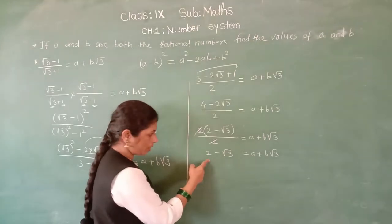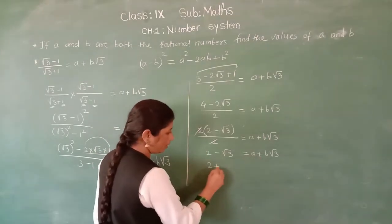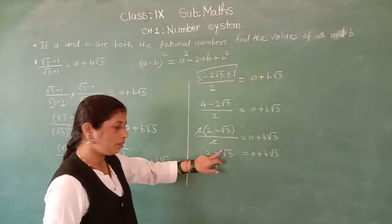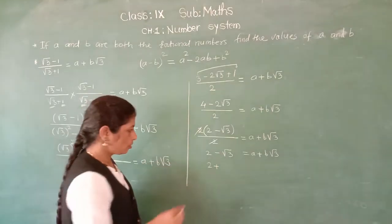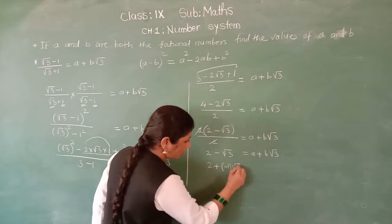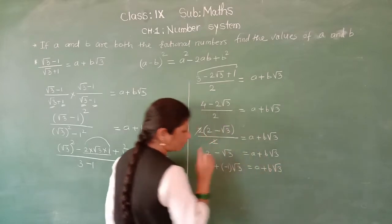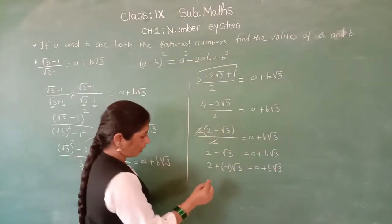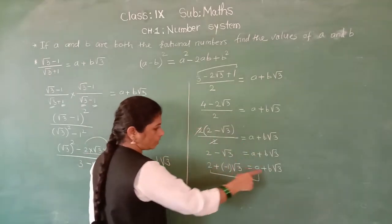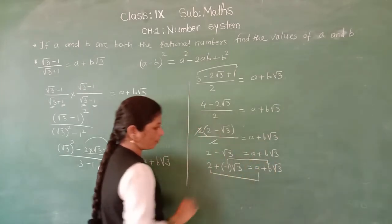Now how do we write this number? See 2 is on one side with plus, and we need to rewrite it. There is a coefficient of root 3 which is 1, so we simply write: 2 plus minus 1 root 3 equals A plus B root 3. So here what is your A? A is your 2, and what is your B? B is minus 1.